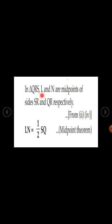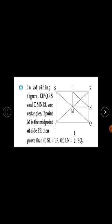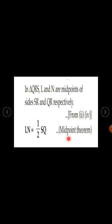In triangle QRS, L and N are midpoints of sides SR and QR respectively, from equations 2 and 4. Therefore, by the midpoint theorem, LN is half of SQ. Hence both required results — SL equal to LR, and LN equal to half of SQ — are proved.